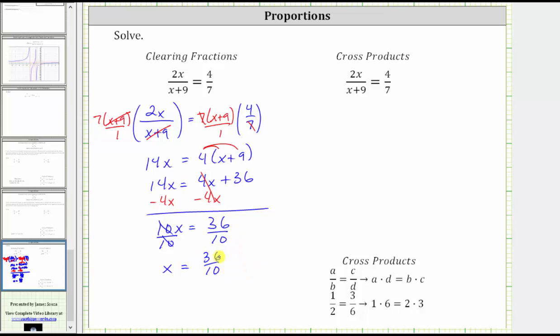But this does simplify because 36 and 10 share a common factor of two. To simplify, we divide the numerator and denominator by two. This gives us x equals 18 fifths, or if we want as a decimal, 3.6.